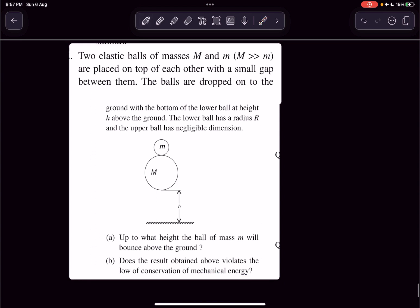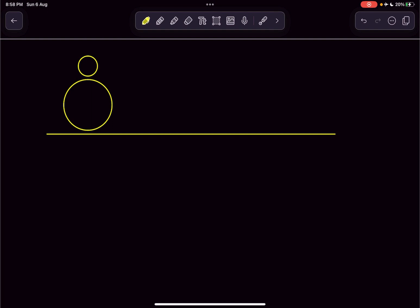I'm going to begin with the solution now. As these two balls are undergoing free fall, both of them will have the same acceleration of g downwards. After falling through a height h, both of them will have the same velocity of square root of 2gh. Let's call that velocity u.